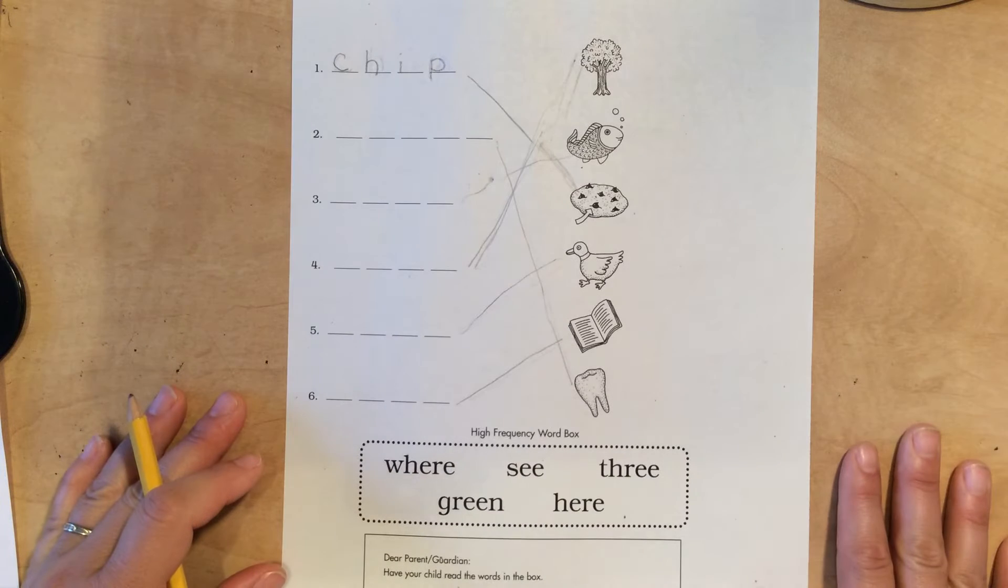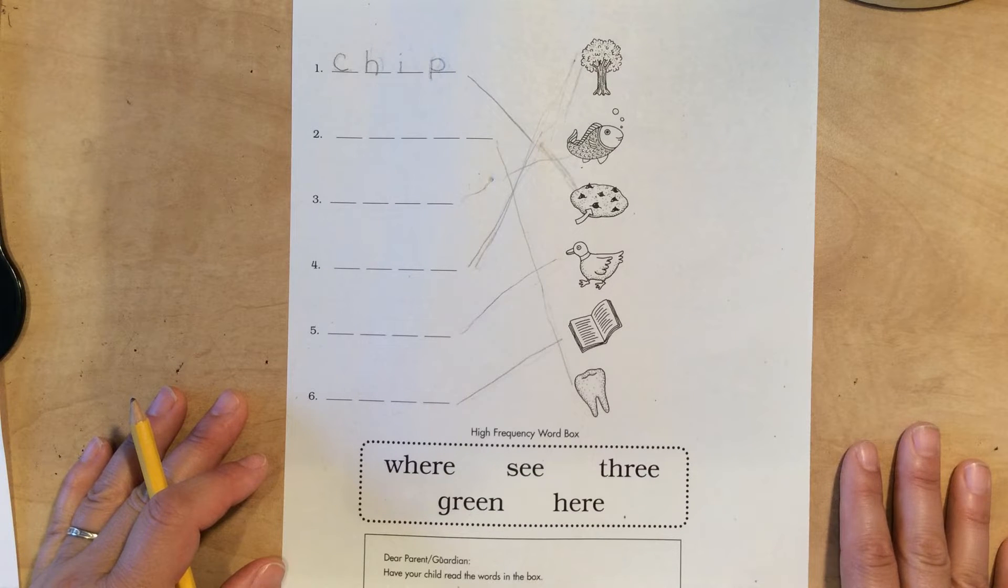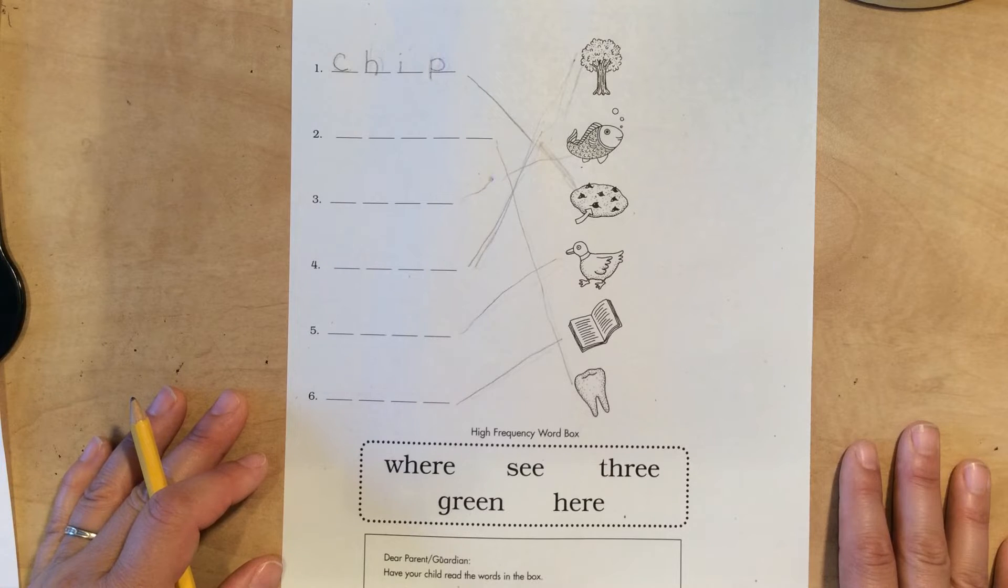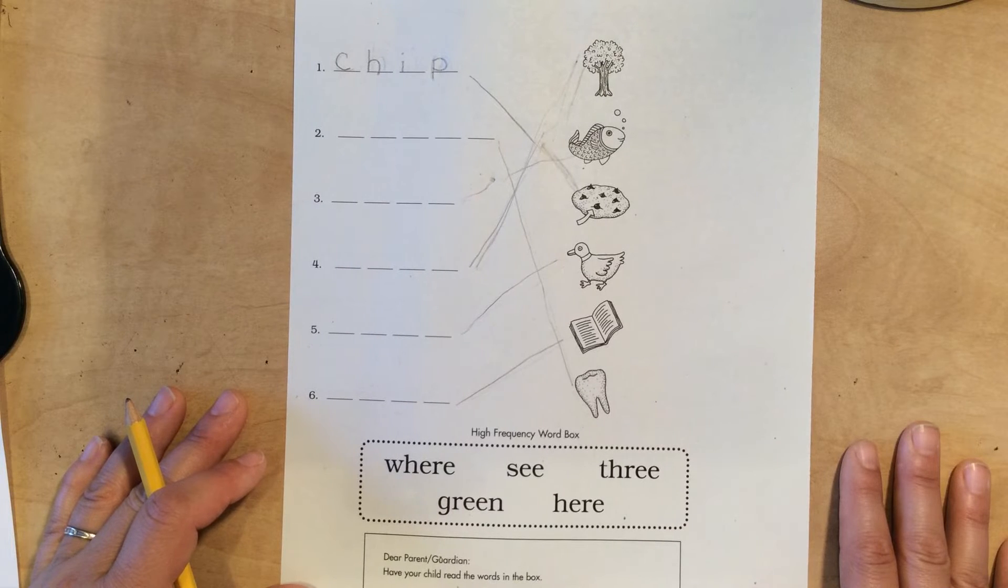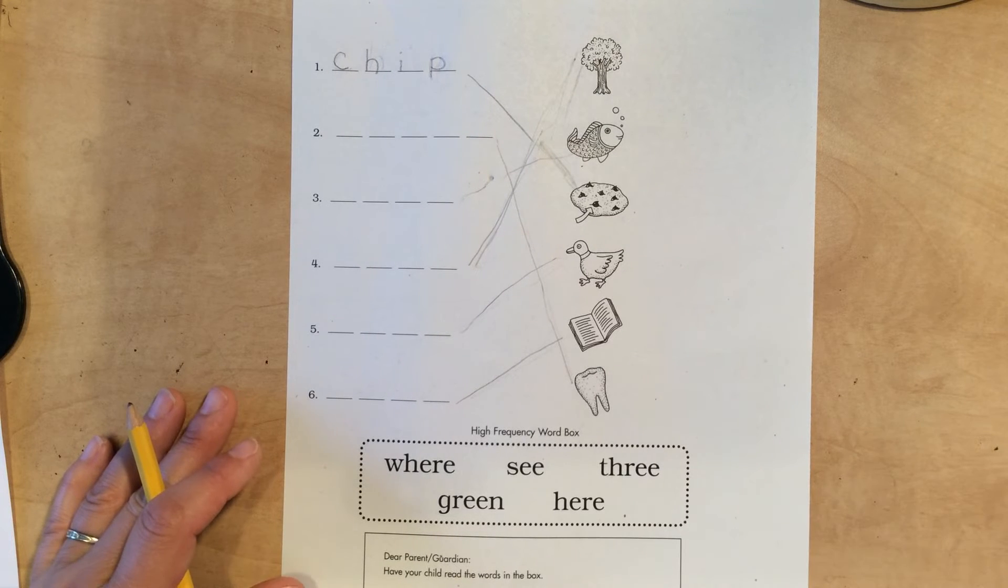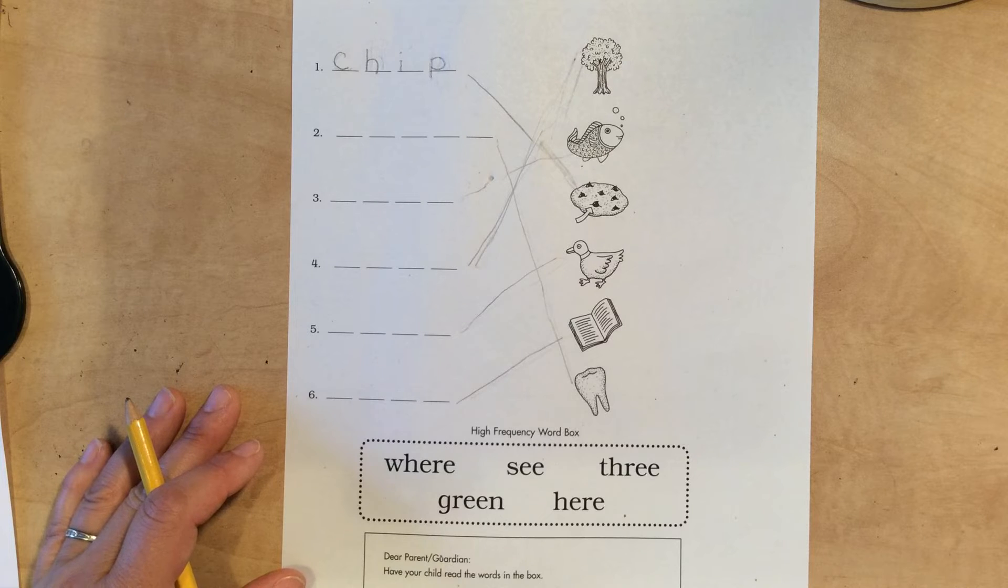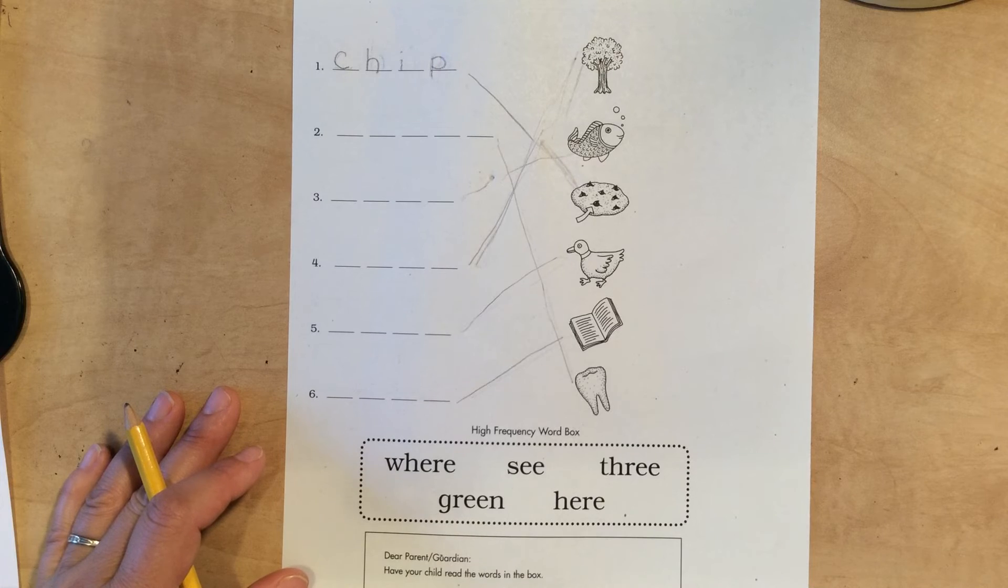Number two, tooth. Number three, fish. Number four, tree. Number five, duck. Number six, book.